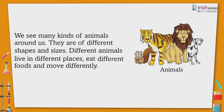We see many kinds of animals around us. They are of different shapes and sizes. Different animals live in different places, eat different foods and move differently.